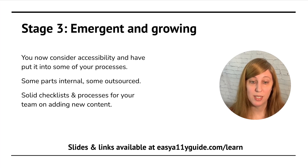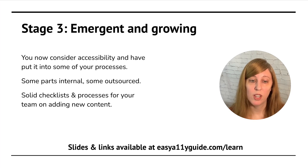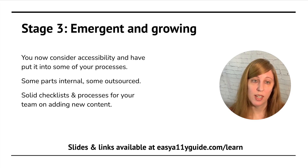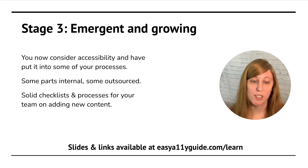Stage three is emergent. At this point, you're going to be considering accessibility in your workflows and you're going to have it in some of your processes. You will have some parts being handled internally, and you'll start to bring more parts internal while still having some stuff outsourced. You'll have solid checklists and processes for your team on adding new content.